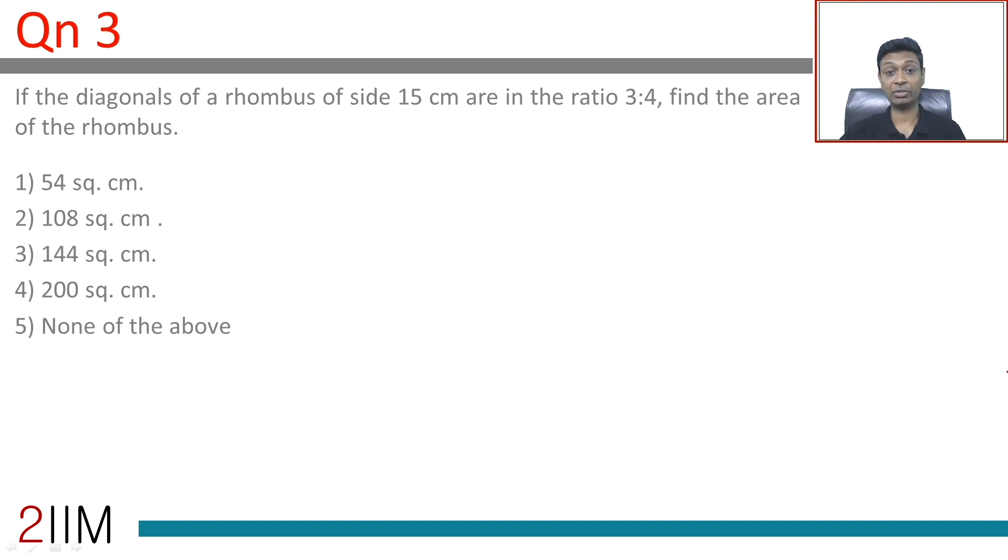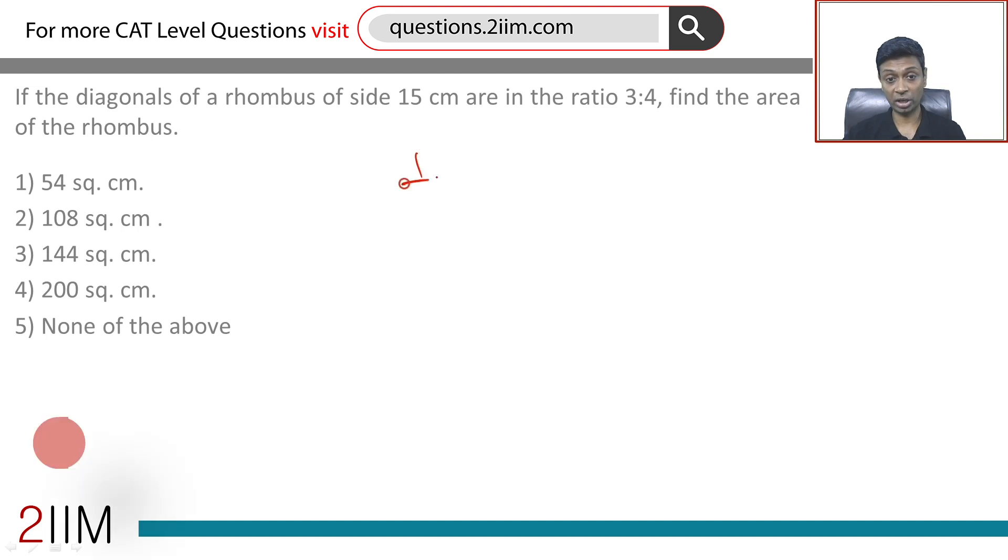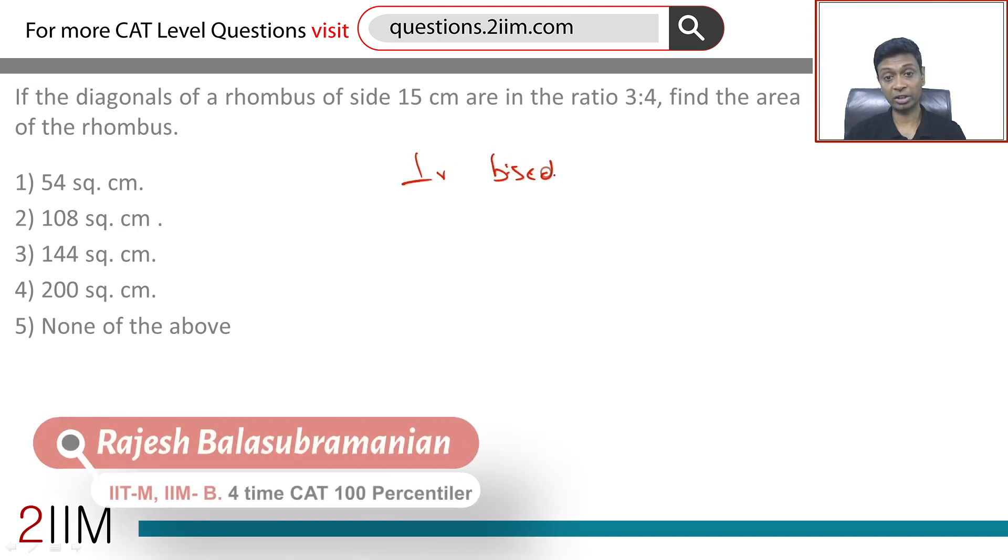The diagonals of a rhombus of side 15 centimeters are in the ratio 3 is to 4. Diagonals of a rhombus are perpendicular bisectors of each other - you should know that, otherwise we're in a dead end.